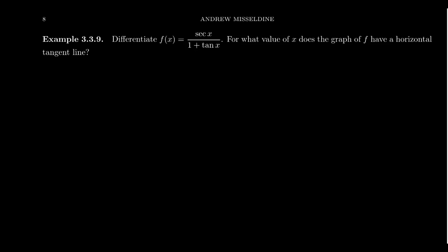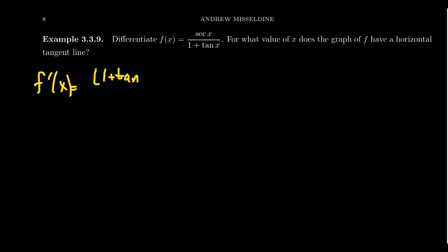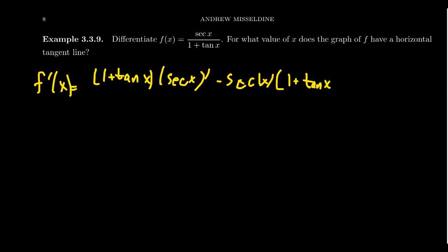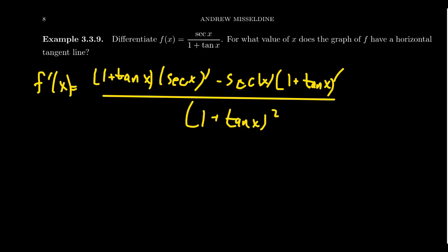Let's find the derivative of f(x) = secant of x over (1 + tangent of x), and use that derivative to figure out where the horizontal tangent lines are. Notice we're finding the tangent line of a function involving tangent — two different meanings of tangent in play. To calculate f prime we use the quotient rule: low d high minus high d low, square the bottom. The derivative of secant is secant of x times tangent of x.